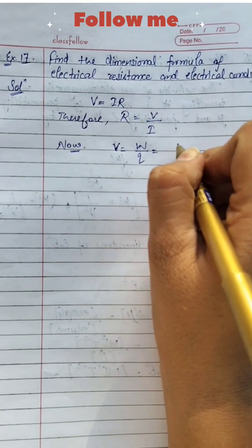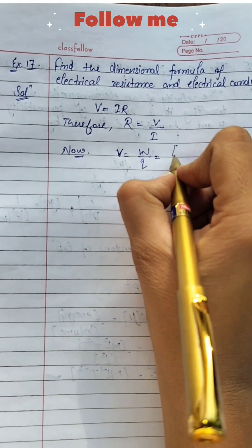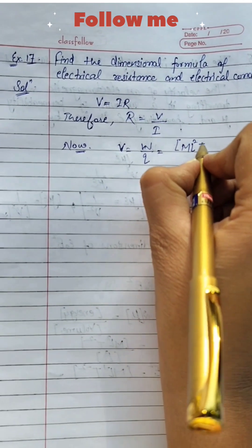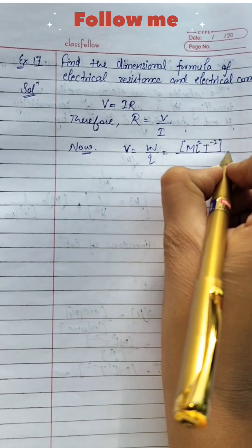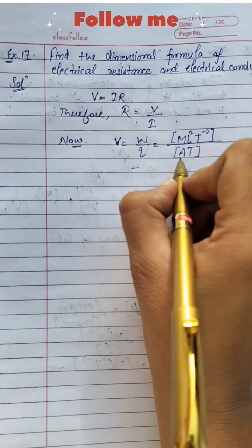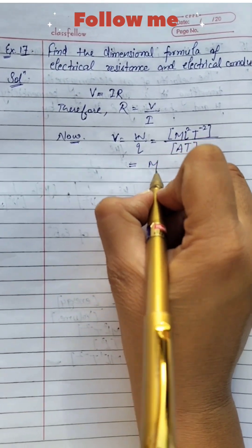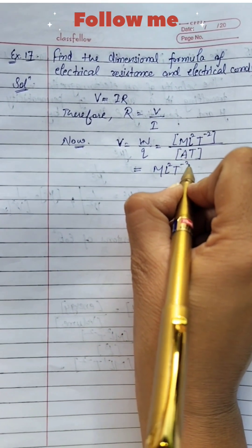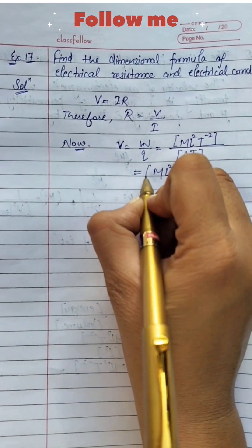If we talk about work done, that has the same dimension formula as energy. So ML² T⁻² upon charge having the value A into T. After solving this equation, we get ML² T⁻³ A⁻¹.